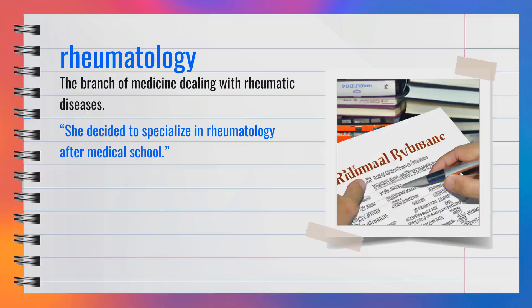The word rheumatology, spelled R-H-E-U-M-A-T-O-L-O-G-Y, is a noun. It refers to the branch of medicine dealing with rheumatic diseases. For example, she decided to specialize in rheumatology after medical school. Rheumatology covers diseases involving joints, muscles, and ligaments.